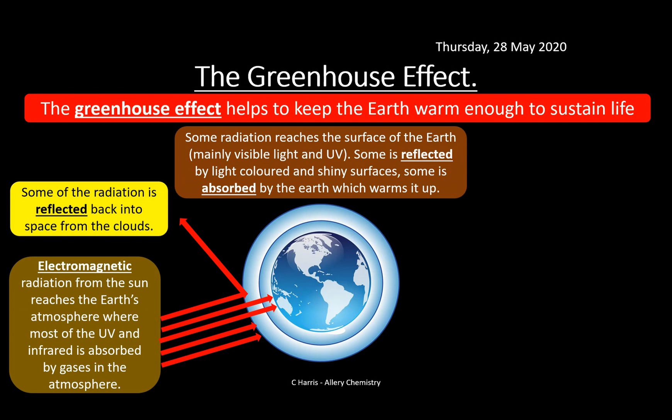Some radiation is reflected by light-coloured and shiny surfaces. For example, in cities like Newcastle, big skyscrapers with glazed reflective fronts reflect some of the radiation from space back out. Some radiation is absorbed into the earth itself — by the ground, rocks, roads, and pavements.